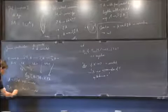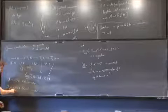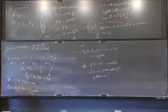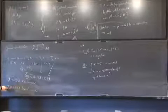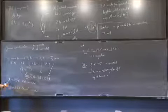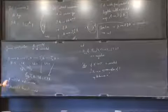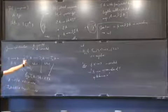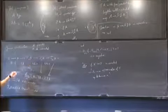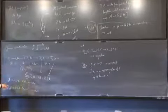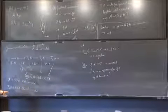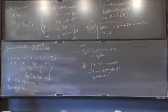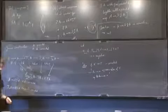So as a consequence you recover the Freudenthal suspension theorem. But you get more: the map from J₂(A) to ΩΣA is 3k+1 connected. So you get a 2k-connected map from A (just Freudenthal), a 3k+1-connected map from J₂(A), a 4k+2-connected map from J₃(A), and so on — a sequence of better approximations to ΩΣA.